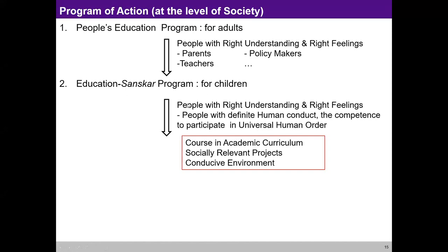When you have an education-sanskar program it becomes a structure. This content is presently included in higher technical education; it needs to go progressively into higher secondary, secondary, and primary education. People with right understanding and right feeling — those with definite human conduct — have the competence to participate in the universal human order and develop courses in academic curriculum, socially relevant projects. There is scope for creativity: internships after every year — social internship after first year, another kind after second, industrial after third — so students can go to a segment of society and conduct workshops there.